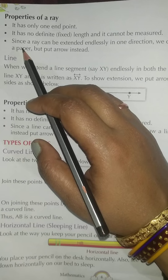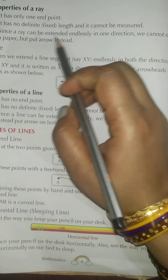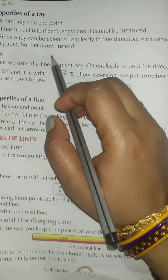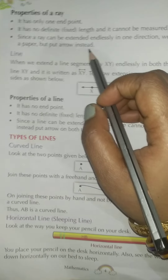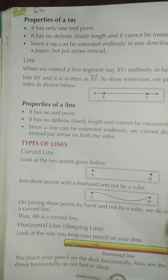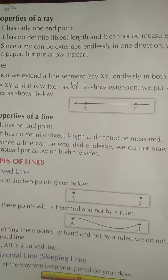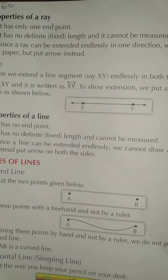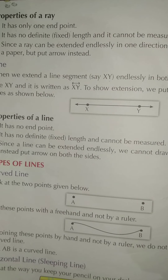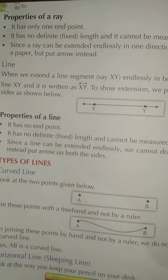Number three — since a Ray can be extended endlessly in one direction, we cannot draw it on a paper. But we put an arrow instead. As it extends in one direction only endlessly, we cannot draw it on a piece of paper. We just put an arrowhead at the end.